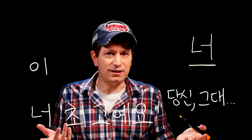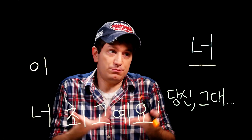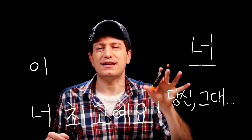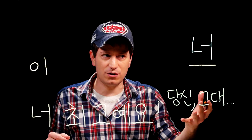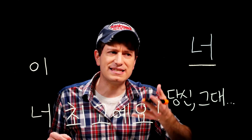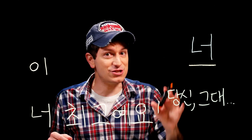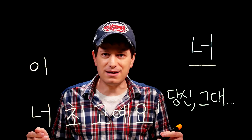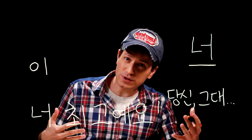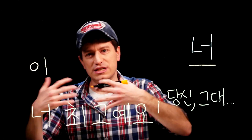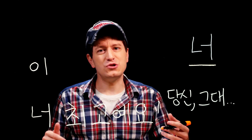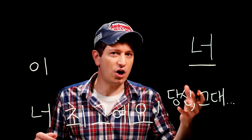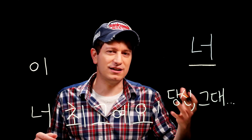Close friends and people who you are older than or at least the same age as — then it's okay. For everyone else, I recommend just using their name. Or if you're not super close with them, you could use 씨. Or if you are kind of close, you can use regular words like 오빠, 언니, 형, 누나, like that.